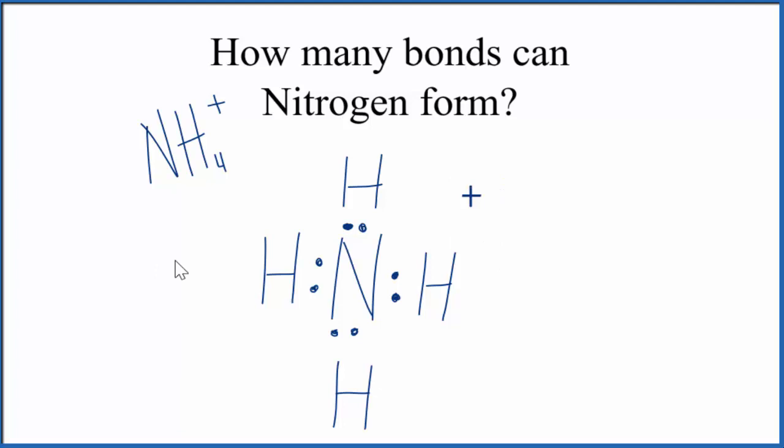So back to our original question. Most of the time, nitrogen is going to form three bonds. However, we do have some instances, like with the ammonium ion, where we could have a coordinate covalent bond as well, and nitrogen could bond to four things. This is Dr. B with the number of bonds that nitrogen can form. Thanks for watching.